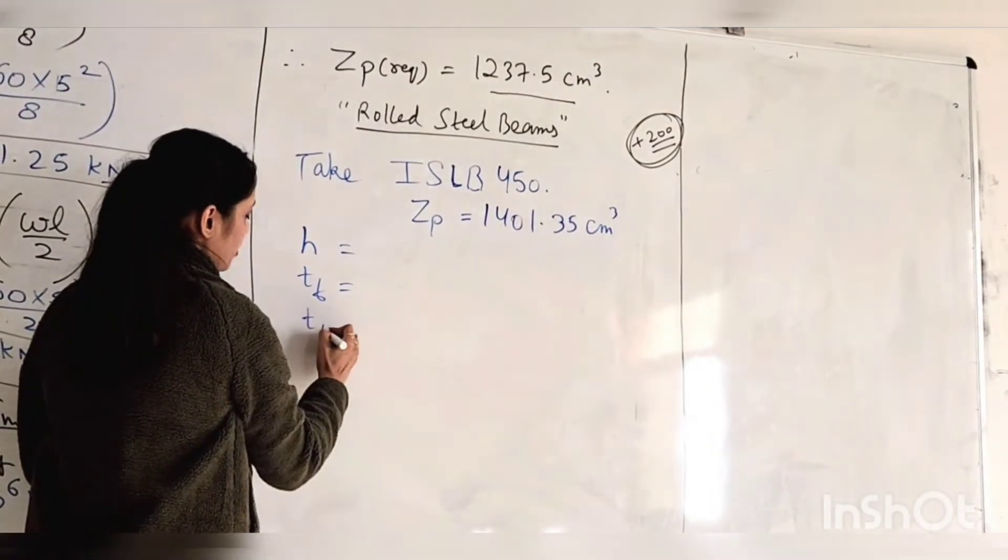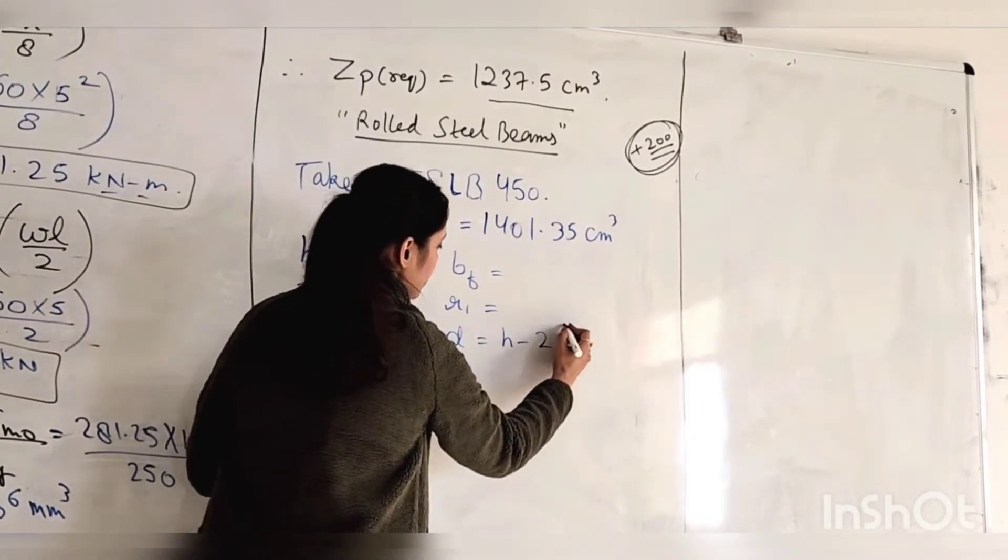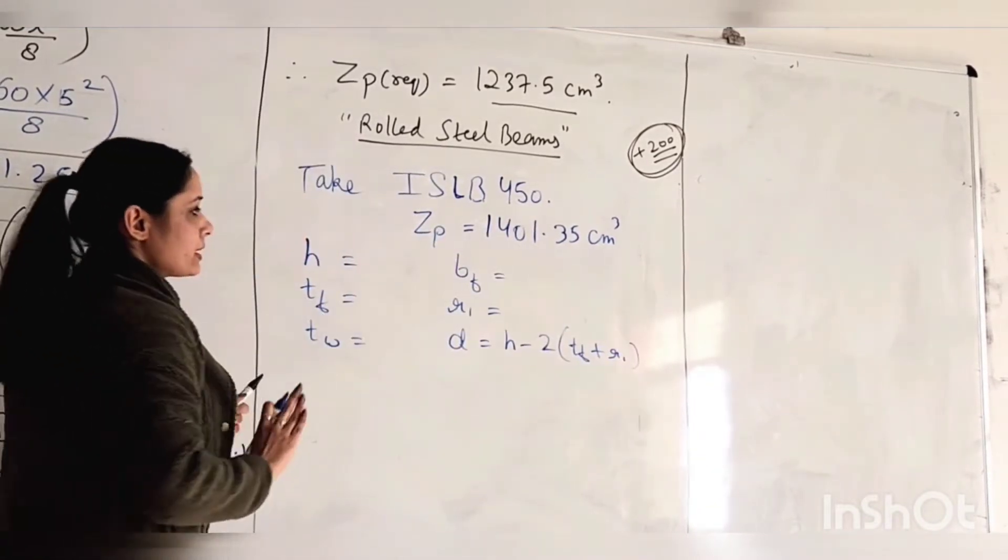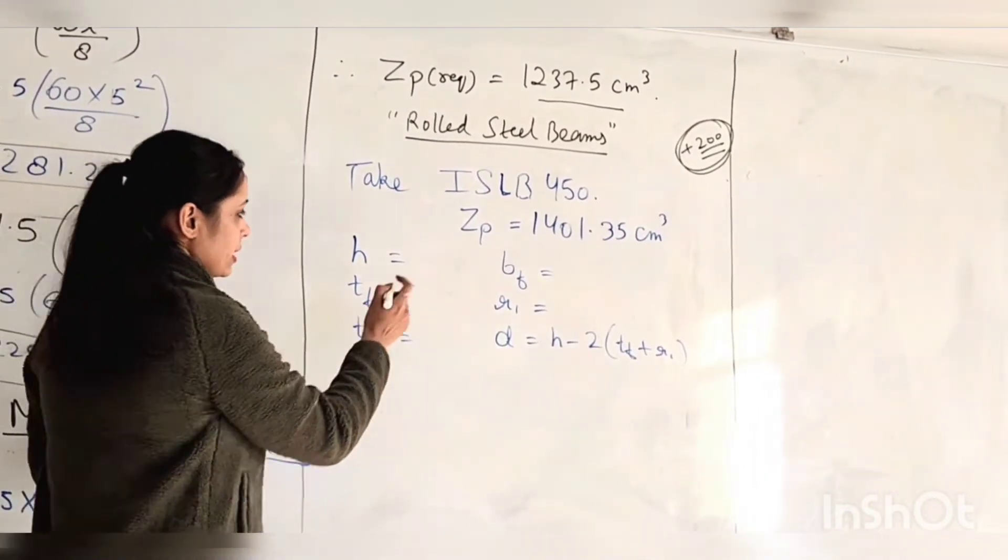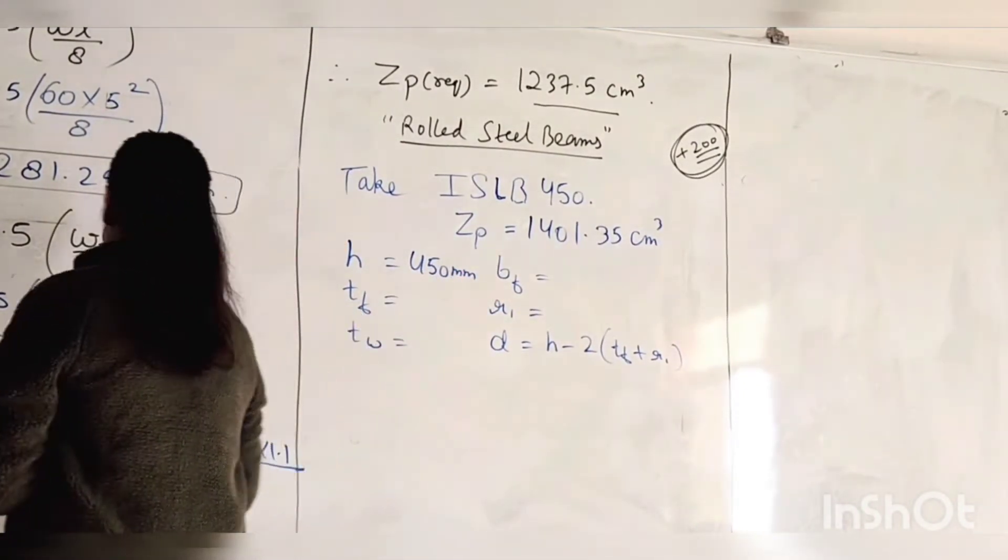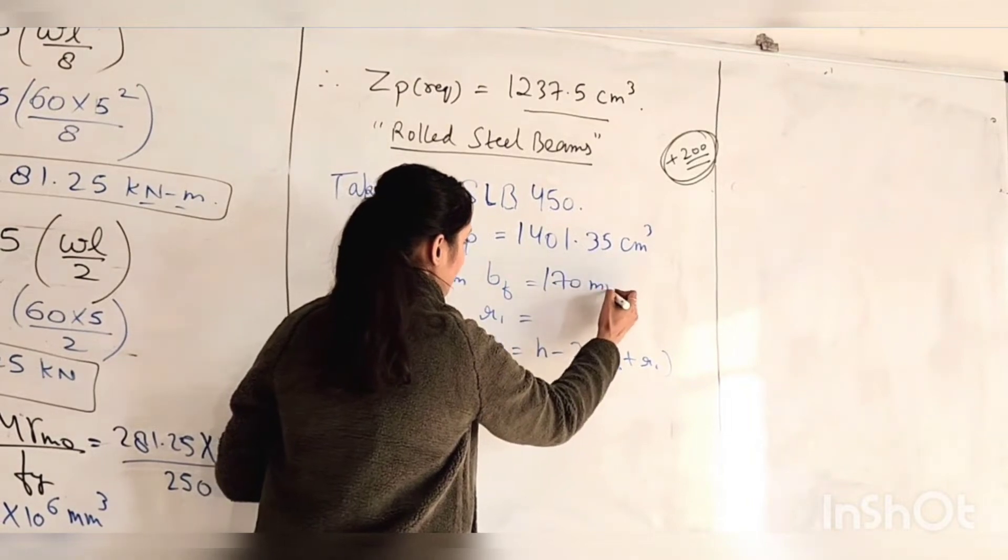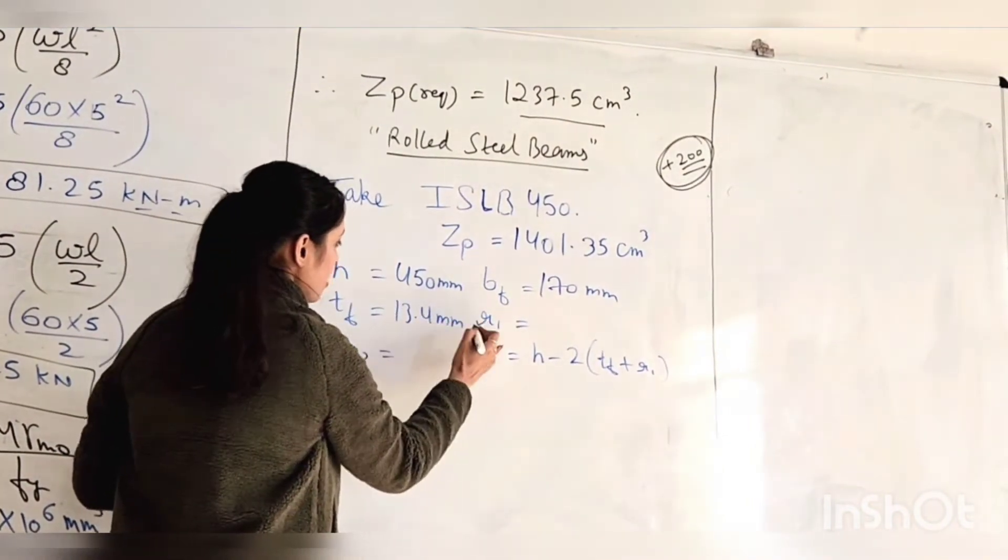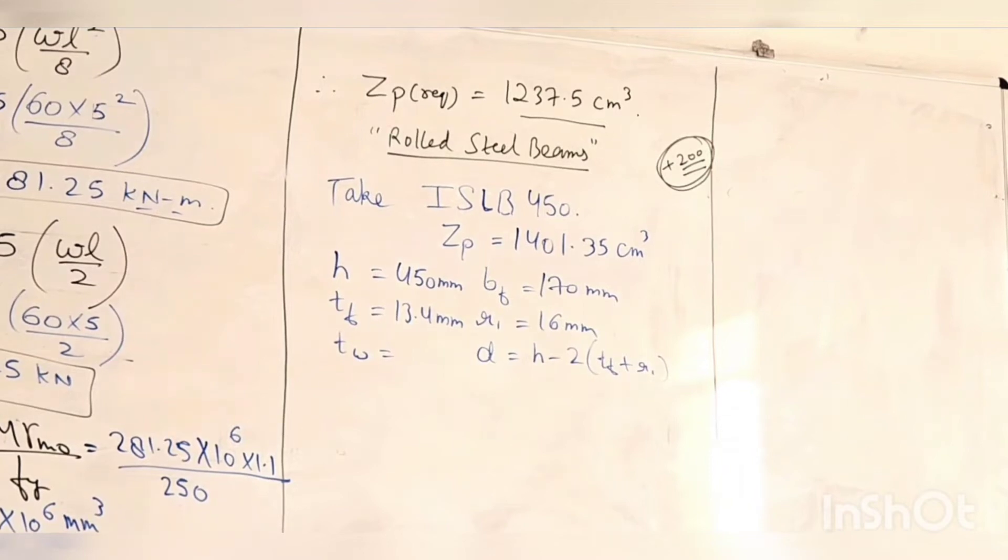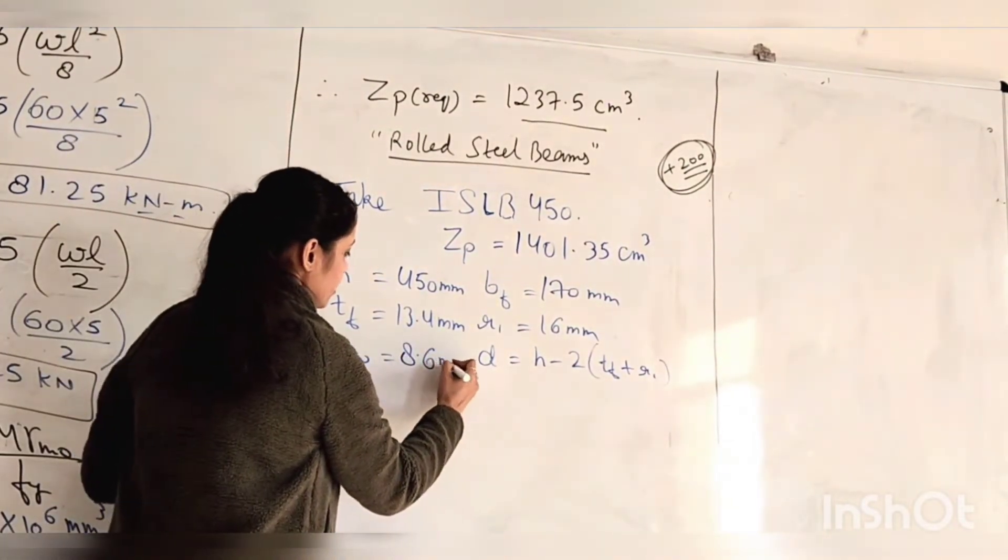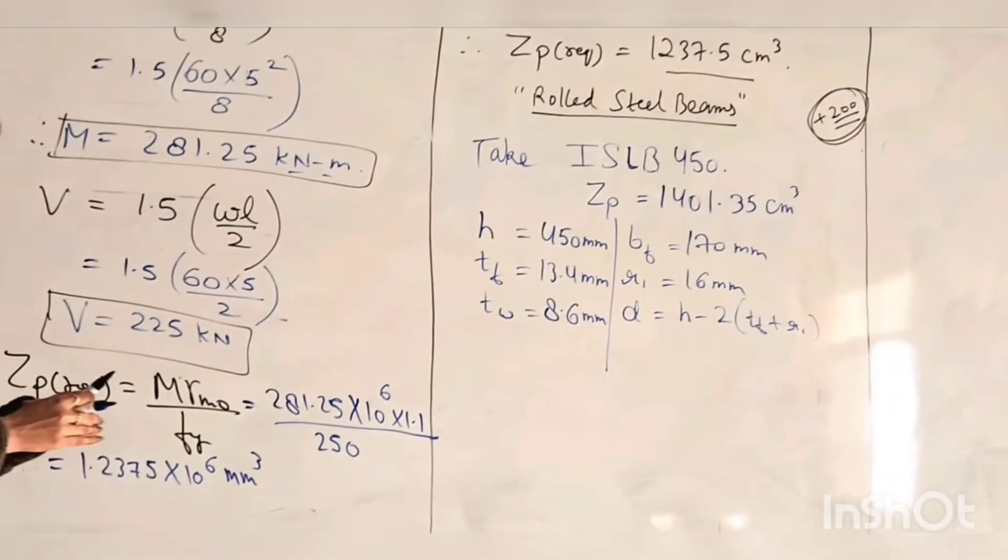Now, the properties we will note: H, TF, TW, BF, R. These are the values of all these properties. H is 450mm, BF is 170mm, TF is 12.7mm, TW is 8.6mm, R is 16mm, and D is 391.2mm. So if we can note this, this step is complete where we chose all the properties.